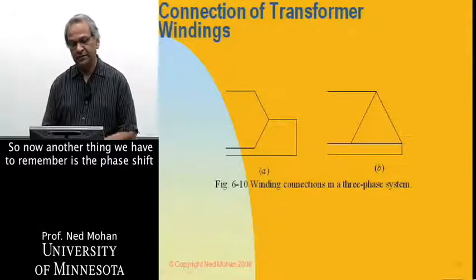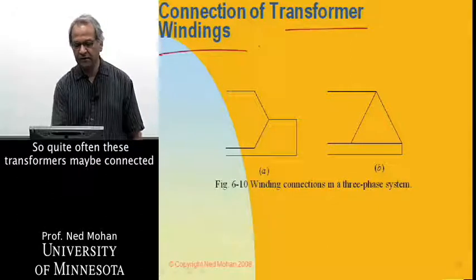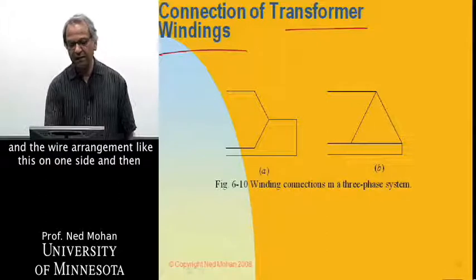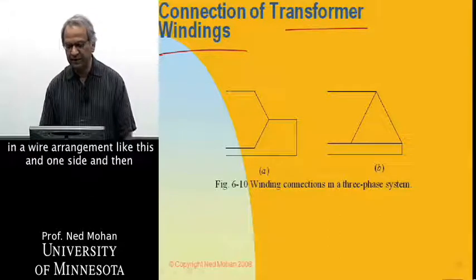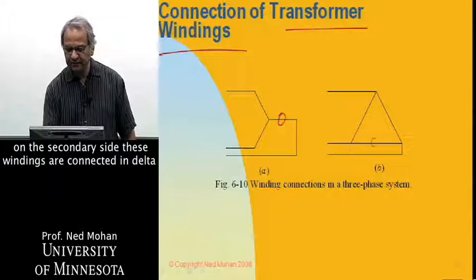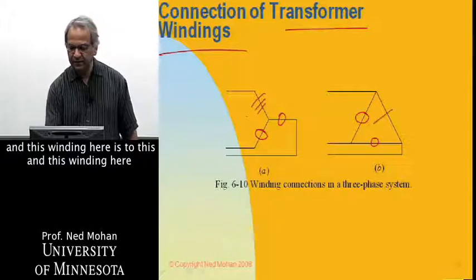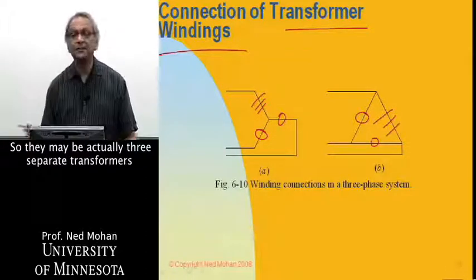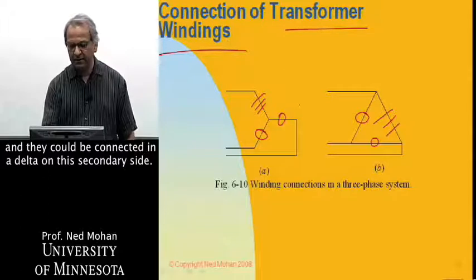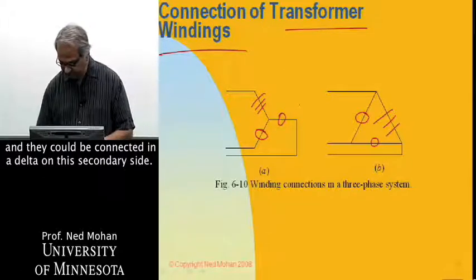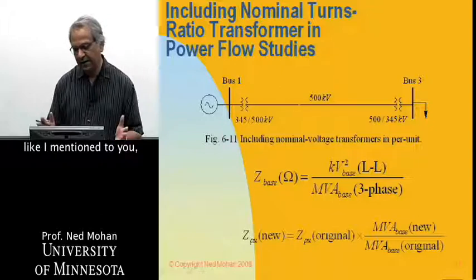The other thing we have to remember is the phase shift that takes place because of transformer winding. So quite often, these transformers may be connected in a Y arrangement like this on one side, and then on the secondary side, these windings are connected in delta. So this winding is coupled to this winding, and this winding here is to this, and this winding here to this over here, like this. So they may be actually three separate transformers which are connected in a Y on this side, and they could be connected in a delta on the secondary side. So we'll see the phase shift there.